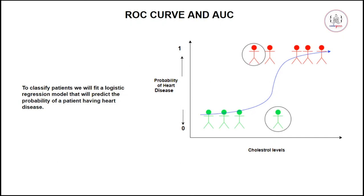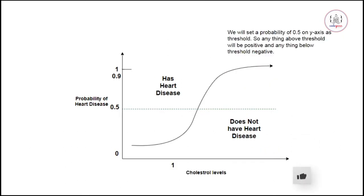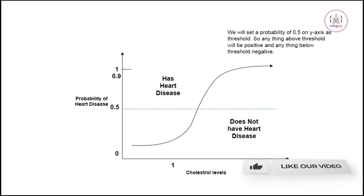The logistic regression model will predict the probability of a patient having heart disease, with probability between 0 and 1. You want to find a threshold to classify whether a person has heart disease or not. By default, logistic regression uses 0.5 as its threshold. Anything below 0.5 is classified as not having heart disease.